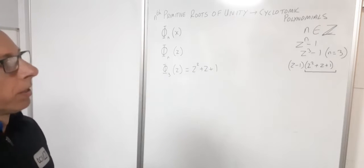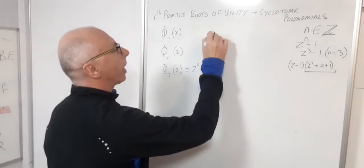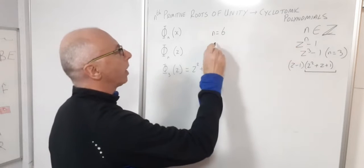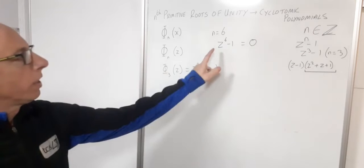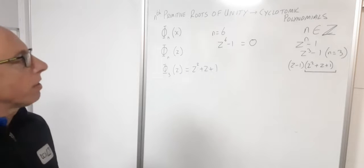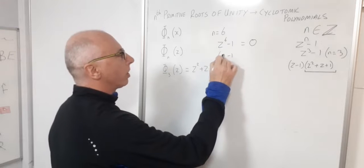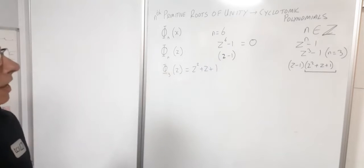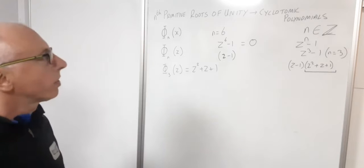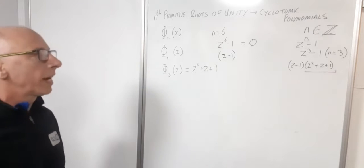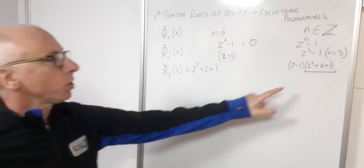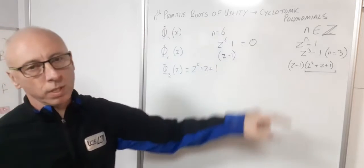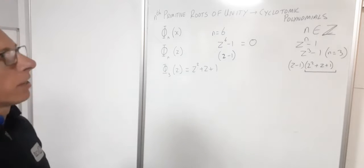For larger values such as n equals six, we'd have z^6 minus one equals zero, which gets messy to factor manually. For something like the eleventh cyclotomic polynomial, that would take a very long time. So we need a general formula to find cyclotomic polynomials, from which we get the nth primitive roots of unity.